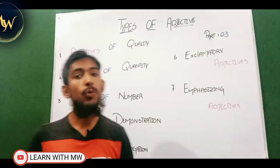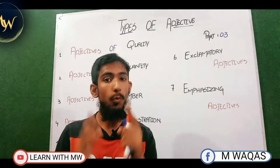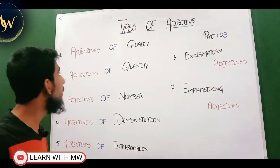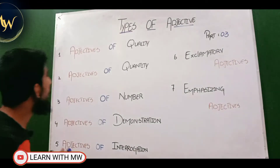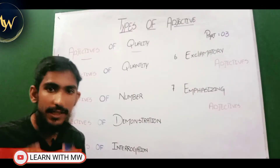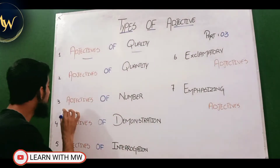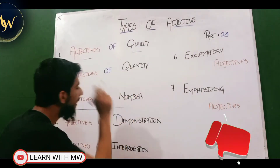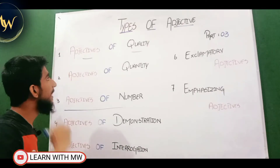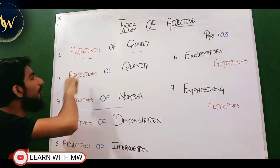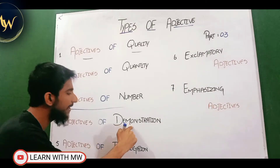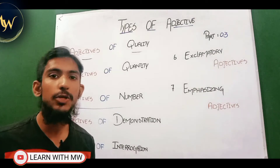In Part 3 we will be discussing the types and kinds of adjectives with tips and tricks. Native writers have noted that there are basically seven types of adjectives in English grammar. The first is adjective of quality, the second is adjective of quantity, and the third is adjective of number. In this video we will describe just these three adjectives. In Part 4 we will discuss adjective of demonstration, adjective of interrogation, exclamatory adjective, and emphasizing adjective in a very detailed and conceptual way.